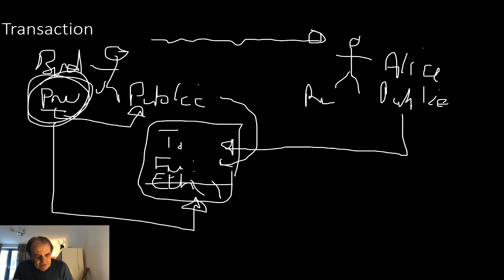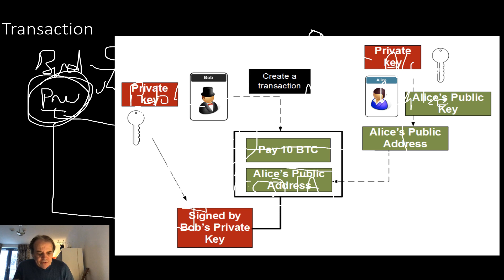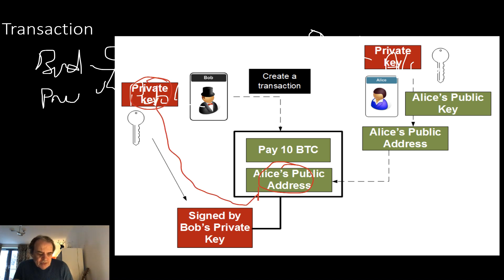The smart thing about this transaction is it uses Elliptic Curve DSA — everyone can check that he has actually signed it without actually requiring his private key. We can see the signed private key, and it is Bob's private key which is used to sign the transaction.